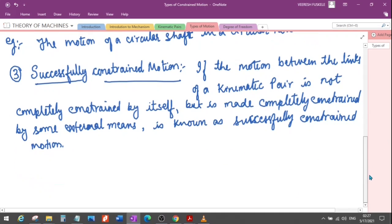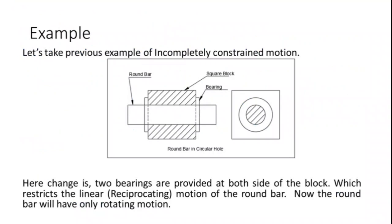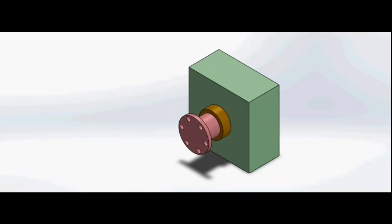The example is the previous case of a circular shaft inside a circular hole of a square block — it was free to either reciprocate or rotate depending on the externally applied force. But if we apply two collars at the two ends of the circular hole, then due to these collars the reciprocating motion of the circular shaft will be restricted and it can have only rotary motion. You can see in the animation that by the application of collars, the motion of the circular shaft is restricted to only rotary motion.